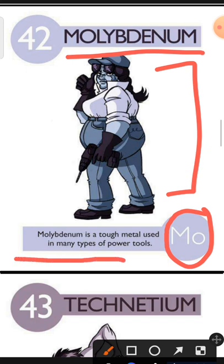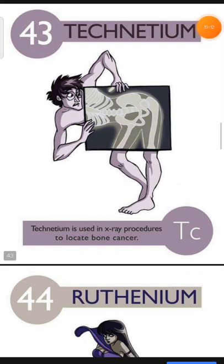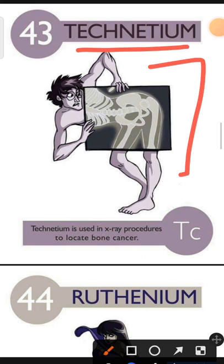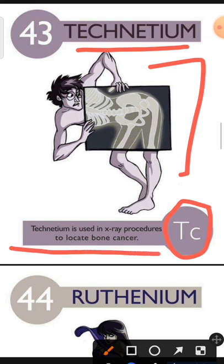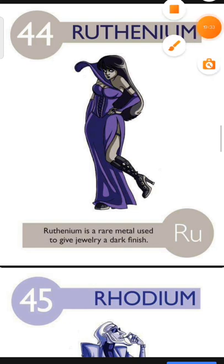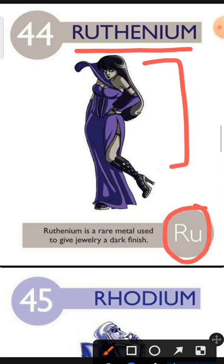Element number 43 is Technetium. The characteristic of Technetium is: Technetium is used in X-ray procedures to locate bone cancer. Element number 44 is Ruthenium. The characteristic of Ruthenium is: Ruthenium is a rare metal used to give jewellery a dark finish.